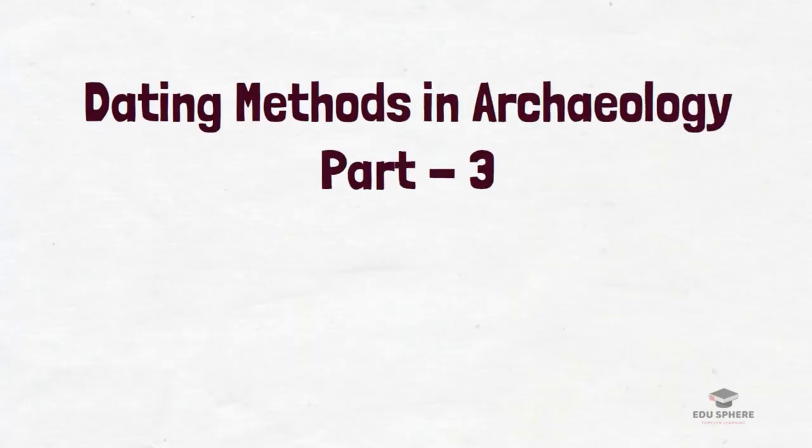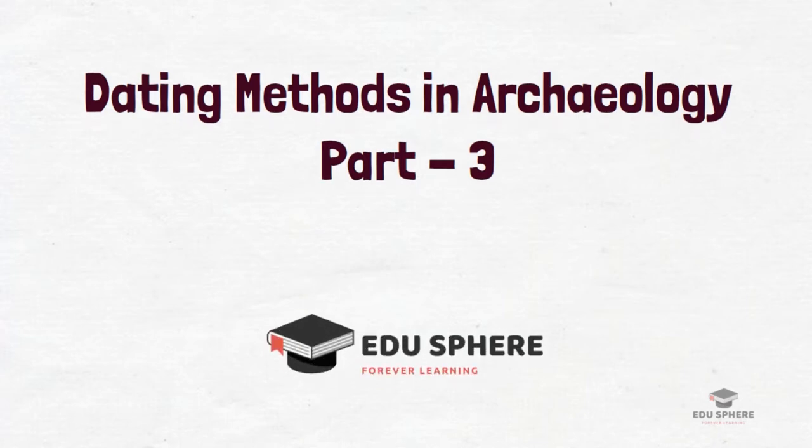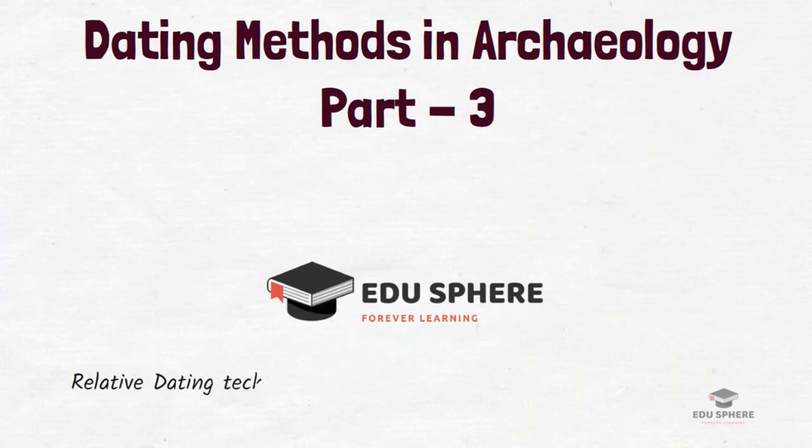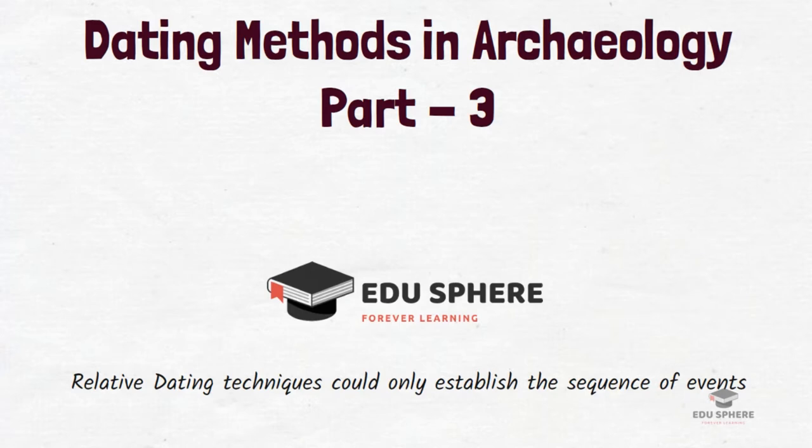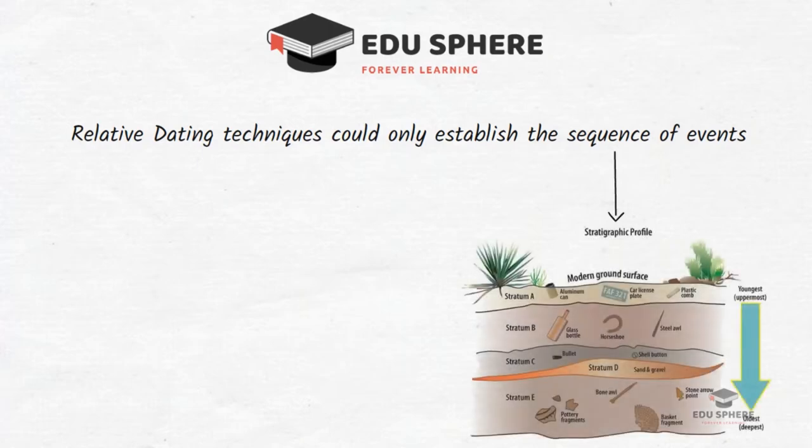Hello friends. In the previous sessions we had discussed different relative dating methods. We know that in case of relative dating, scientists compare an object to other similar materials in order to establish a chronological timeline. But the relative dating techniques could only establish the sequence of events, for instance by determining the relative stratigraphic position of various kinds of fossils. But they could not tell whether a given sequence of events took place exactly 50,000 or 150,000 years ago.